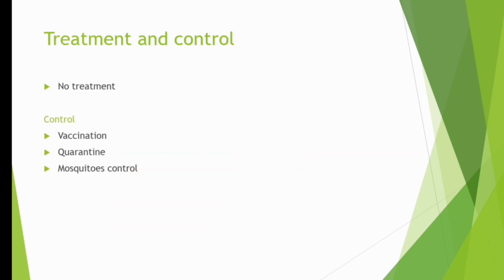Treatment and control of fowlpox: it has no treatment. For control, you should vaccinate your chickens. Quarantine and isolation of suspected ones from healthy ones. Make sure you control mosquitoes, because mosquitoes are the transmitters of this disease and can transmit it from one flock to another. Control mosquitoes by planting aromatic trees that repel them, and remove stagnant water around your flocks to avoid mosquito breeding.